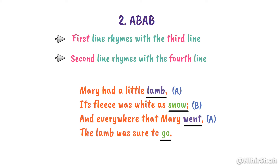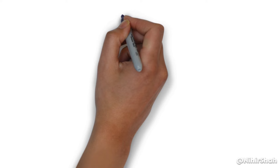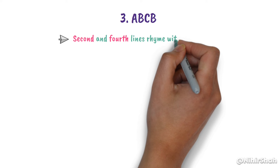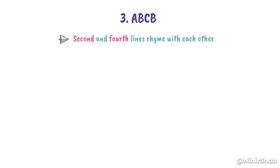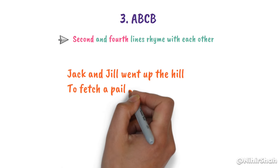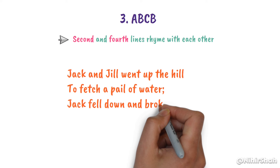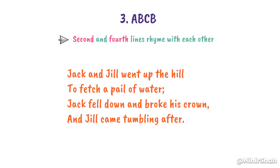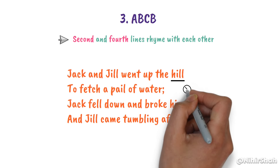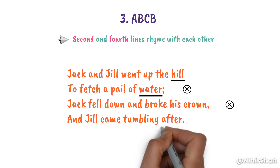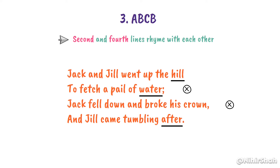Let's look into the 3rd rhyme scheme, A-B-C-B. Here, only the 2nd and 4th lines rhyme with each other. For example: 'Jack and Jill went up the hill to fetch a pail of water. Jack fell down and broke his crown. And Jill came tumbling after.' In this example, 'hill' does not rhyme with 'water' or 'crown', but 'water' rhymes with 'after'. So line 2 and line 4 are rhyming, and the rest of the lines are not rhyming.